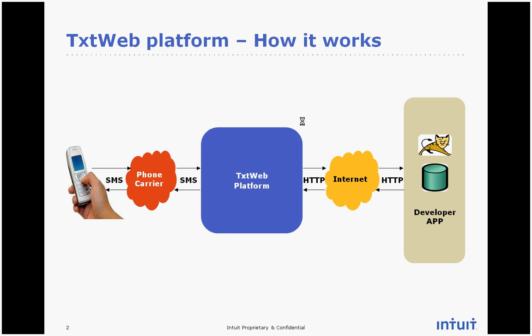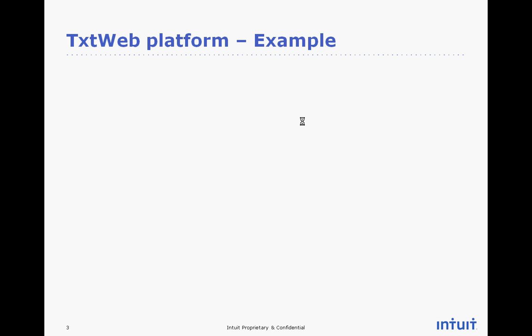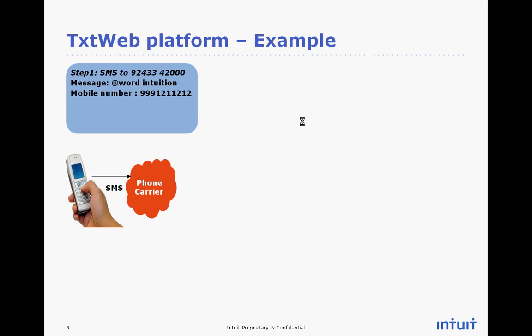Let's dig in a little bit deeper into this picture and see what is actually happening behind the scenes by taking an example. Let's take an example of a TextWeb application, which is a word lookup application. Essentially, given a word that is sent over SMS, it can give you back the meaning of the word.